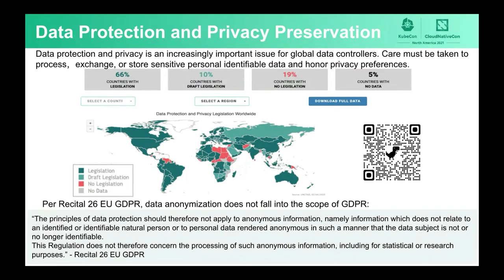Data encryption and decryption often increase computational and operational, sometimes even financial, overheads. So this is not a solution for all use cases. In many use cases, especially machine learning, private personal information is not used at all, so it can be completely removed from the original data form. This process is called data anonymization. According to EU GDPR recital 26, data anonymization does not fall into the scope of the law. Our use case is to anonymize data in a hosted storage environment.